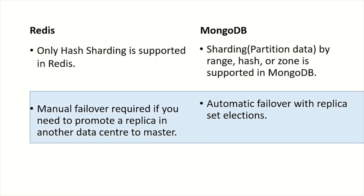In Redis, manual failover is required if you need to promote a replica in another data center to master, whereas in MongoDB, automatic failover with replica set elections is available.